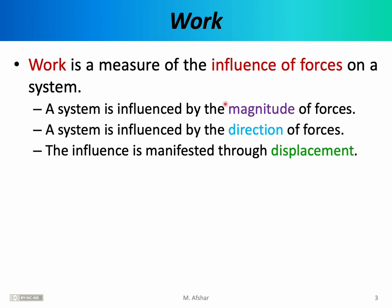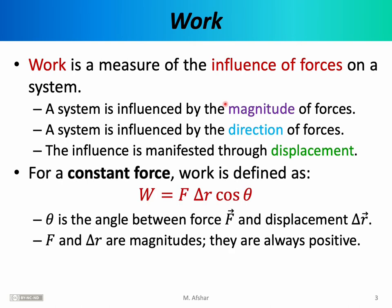Here's the equation for work. If you want to calculate the numerical value of work, at least for a constant force, this is the formula: work, denoted by W (uppercase W — don't confuse it with lowercase w, which stands for weight), is equal to force times displacement times cosine of theta. Theta is the angle between force and displacement. So we have a system like a box, a force being applied to it, and that's one vector. As a result, the box is going to move — there's going to be some displacement, delta r, and that's a second vector. The angle between these two vectors is theta.